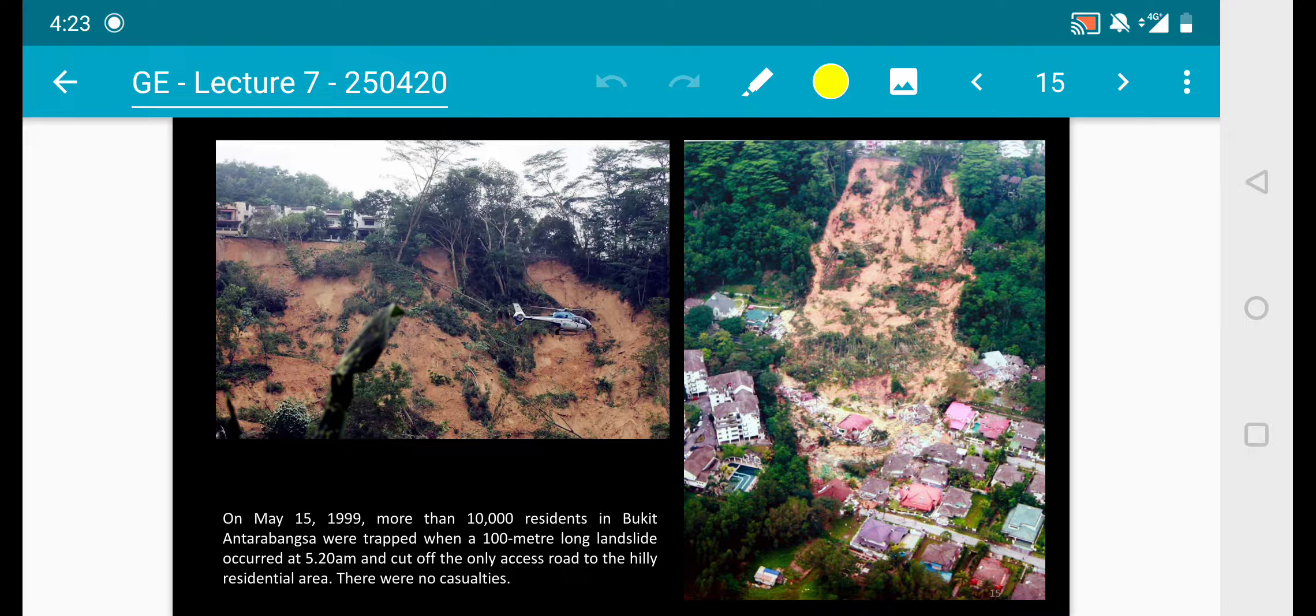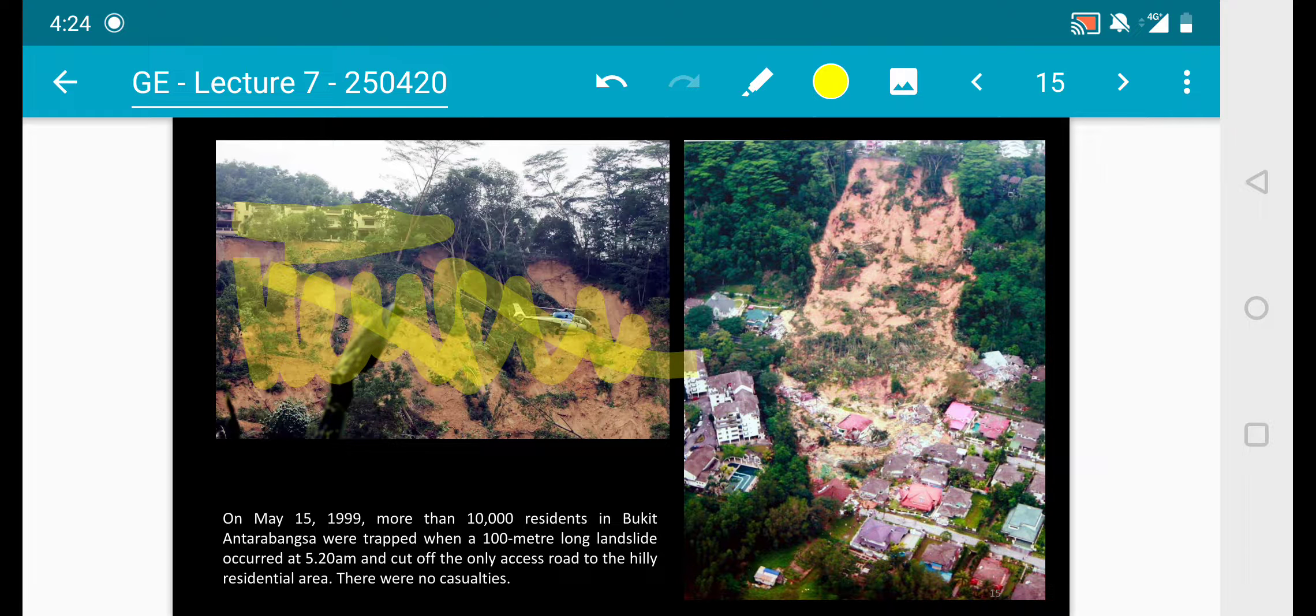The third case I would like to share is on a landslide. Back in May 1999, more than 10,000 residents in Bukit Antara Bangsa were trapped when a 100-meter long landslide occurred at 5:20 AM and it cut off the only access road to the hilly residential area. There were no casualties. When you're building a residential next to a hilly area, it actually has a high risk. Take note of this in the future - risk for the person on top and also for the person living below it.